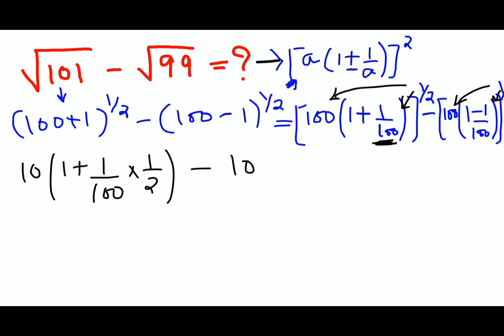Similarly here I have 10 into 1 plus, sorry not plus, there is a minus over here, minus 1 upon 100 into 1 upon 2. Now let's take the 10 inside the bracket. So what we'll get over here is 10 plus 10 upon 100 into 2, minus 10. Now this minus 10 multiplied by minus 1 upon 100 gets you plus 10 upon 100 into 1 upon 2.